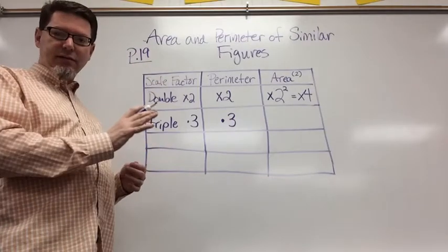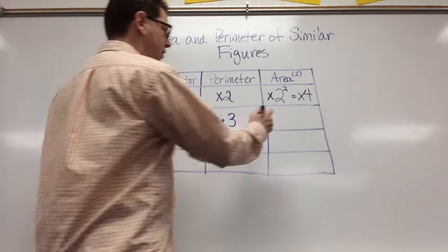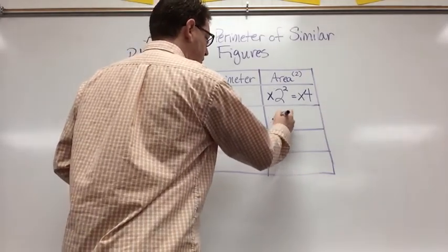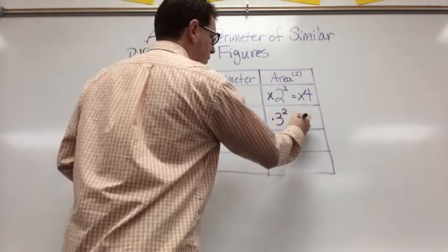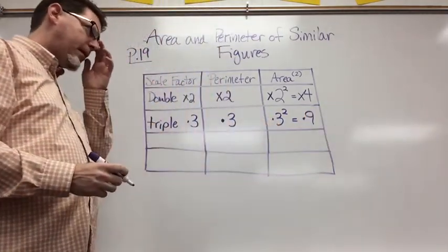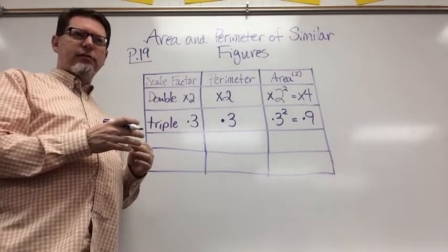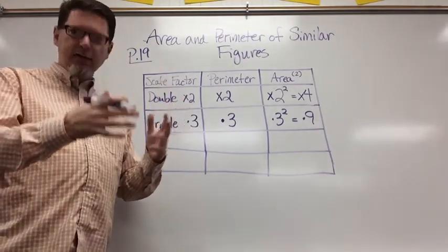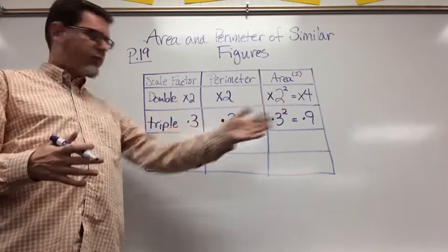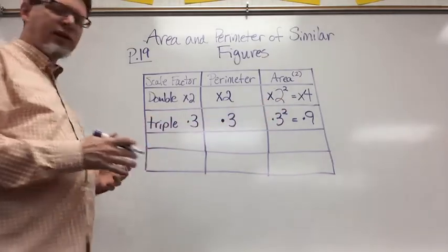But when we talk about the area we're talking about the squares, so it's actually going to be times 3 squared which equals times 9. So my original area times 9 will be the area of the new figure that's tripled in size.